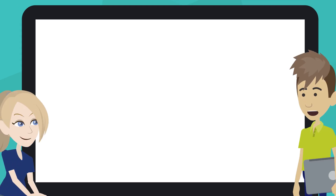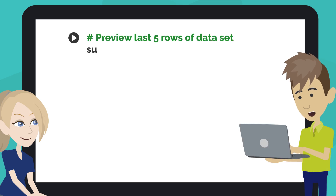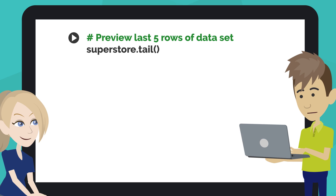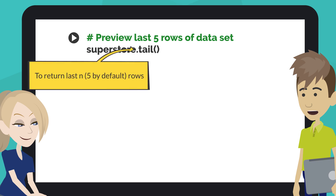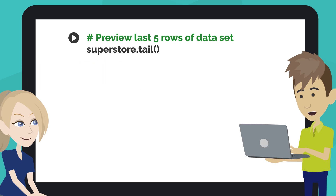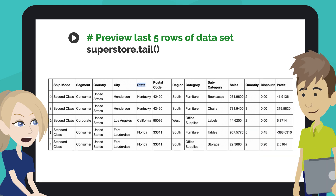Let's show a table of the last five rows of the dataset. Type the code like this into the next code cell of your notebook. This code shows the last five rows of the dataset. Pandas' tail method returns the last n rows — five, by default — of the dataset. Don't forget to click the play button or hit Shift + Enter.